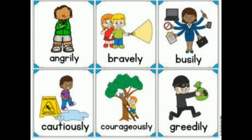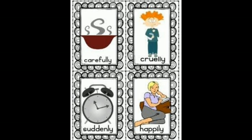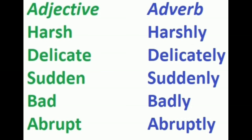Here are some more examples of adverbs of manner: carefully, cruelly, suddenly, and happily. Now we will see how adjectives change to adverbs: harsh becomes harshly, delicate becomes delicately, sudden becomes suddenly, and bad becomes badly.